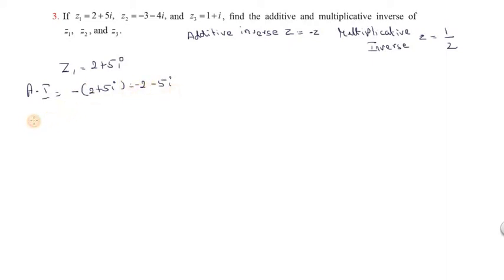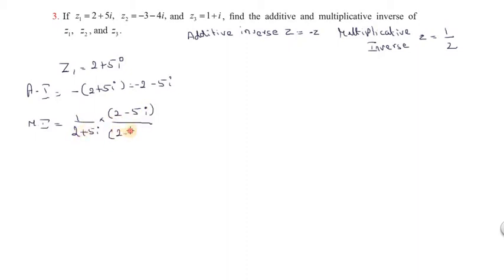The multiplicative inverse is MI equal to 1 by (2 plus 5i). We multiply the conjugate with the numerator and denominator. The conjugate is 2 minus 5i — the sign changes. So the conjugate of the numerator and denominator is 2 minus 5i. The denominator becomes a plus b into a minus b format, which equals a squared minus b squared.